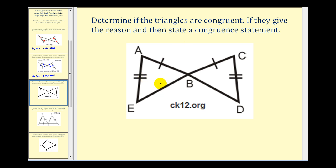Same question, different diagram. The only information we're given here is that segment AB is congruent to segment BC, and segment AE is congruent to segment CD. These two intersecting segments do form vertical angles, so we could conclude that angle ABE is congruent to angle CBD. But notice we have side-side-angle, which does not fit one of the four postulates. Therefore, we cannot conclude that these are congruent triangles.